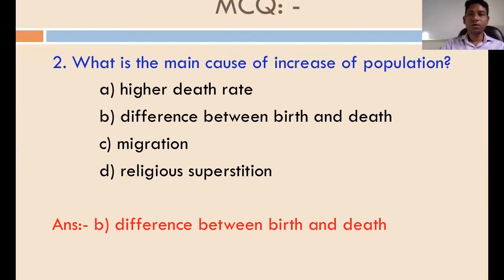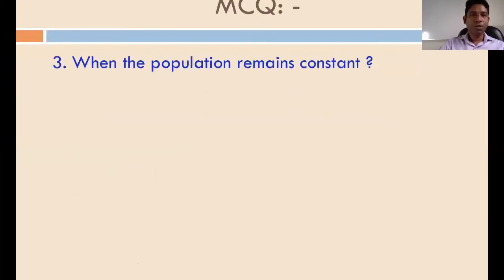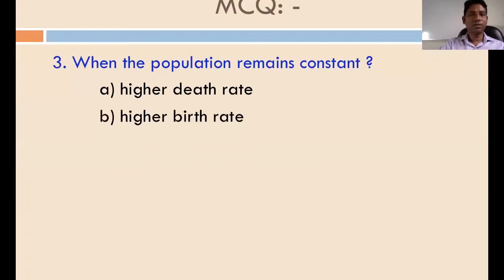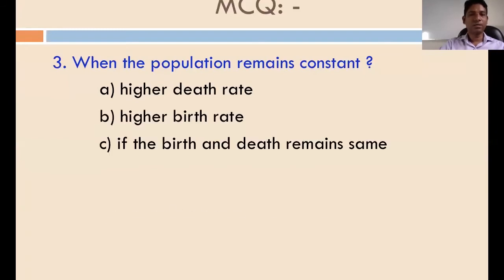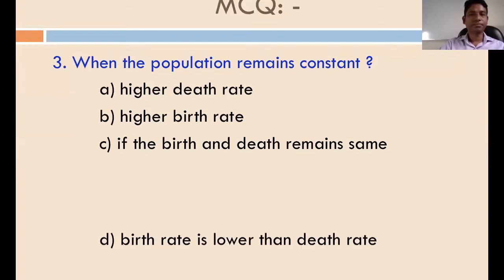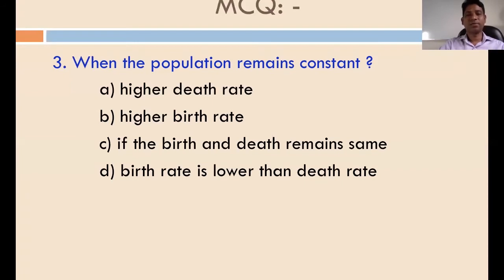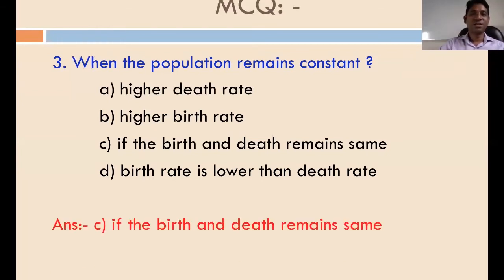Question number three: when does the population remain constant? The options are higher death rate, higher birth rate, if the birth and death rate remain the same, or birth rate lower than death rate. The answer is C — if the birth and death rate remain the same, then the population remains constant. Thank you very much.